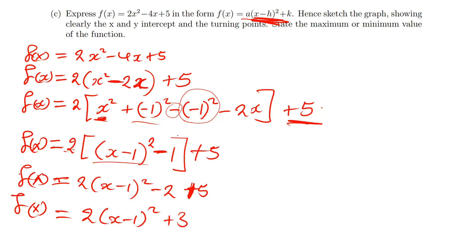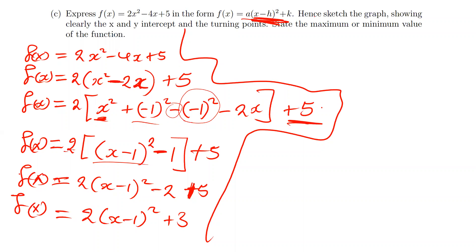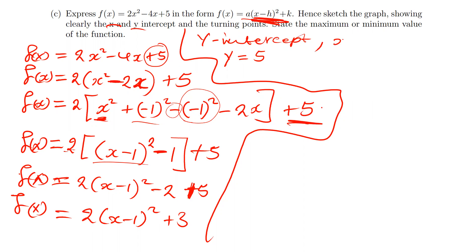The question now asks us to sketch the graph showing clearly the x and y intercepts. The y-intercept is the simplest to find. In the y-axis, the value of x is zero. Substituting x = 0 into f(x) = 2x² − 4x + 5, we simply get 5. So the y-intercept is y = 5.